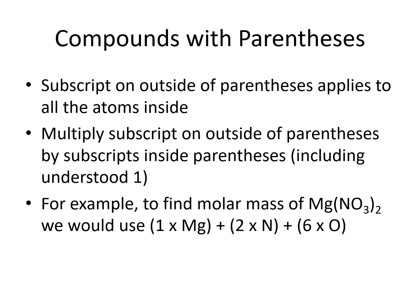So you would have 1 times the mass of magnesium, plus 2 times the mass of nitrogen, plus 6 times the mass of oxygen from the periodic table, and add them up. Notice the magnesium does not get multiplied by 2, because it is not within the parentheses.